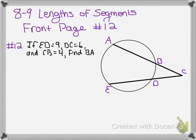So this question is from Worksheet 8-9, Lengths of Segments. This is number 12 on the front of the page. This is two secants intersecting outside of a circle.